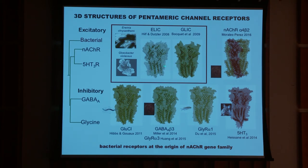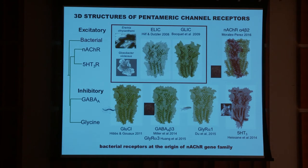So we identified the X-ray structure from these bacteria, and also from Hilbert-Duxler, and subsequently other groups identified the receptor for glutamate, for GABA, for serotonin, and very recently the nicotinic receptor itself. So we now have the atomic structure of this elementary building block involved in signal transduction at the synapse.